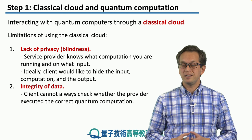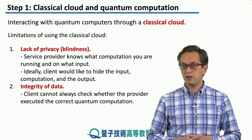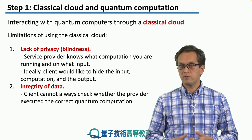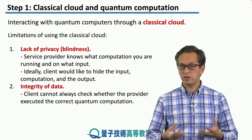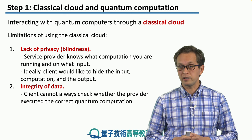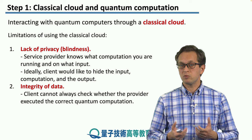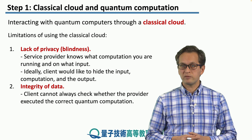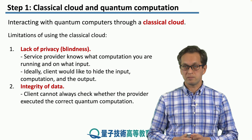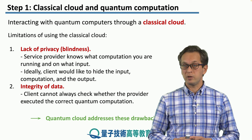The second limitation is the integrity of data. What we are referring to here is that we have no way of verifying the output of the quantum device or the quantum computer in general. For some problems, such as factoring of large prime numbers, this is no problem — we just take the two prime factors and multiply them together to check if we get the correct answer. But this is not true for general universal quantum computation or quantum simulations. So it would be nice for clients to have the capability of verifying that the quantum service provider is following our instructions. We will see that this is indeed possible with the quantum cloud, and we are going to begin in the next step.